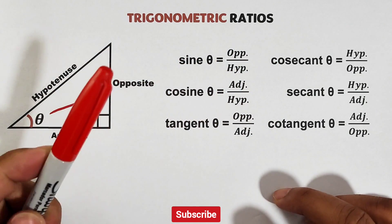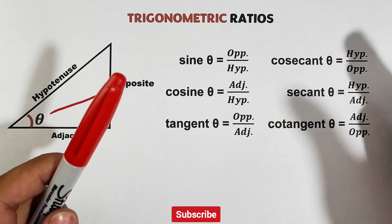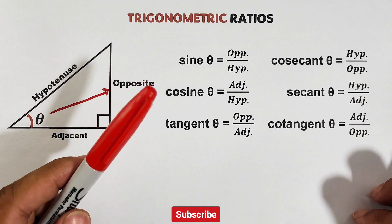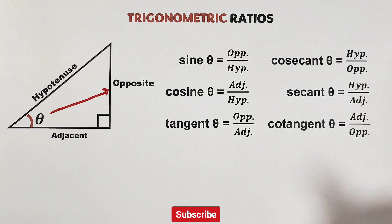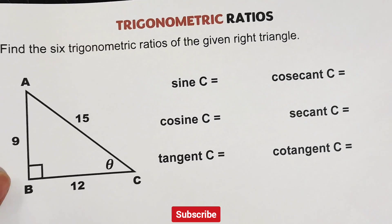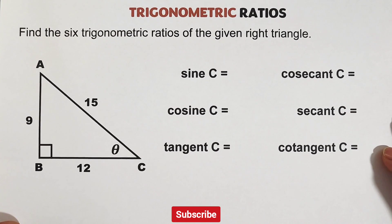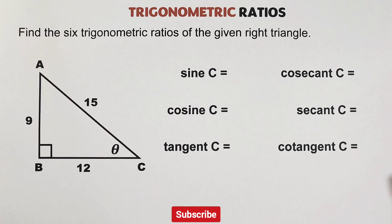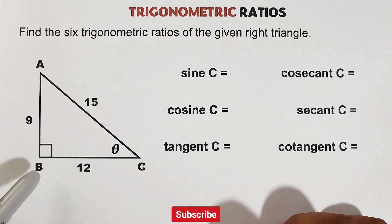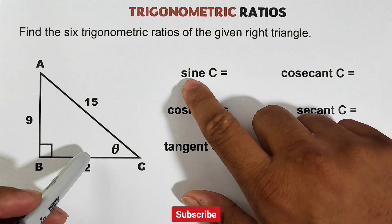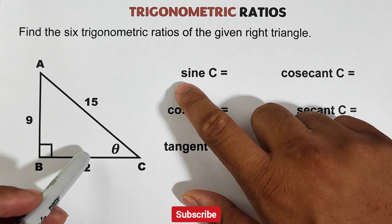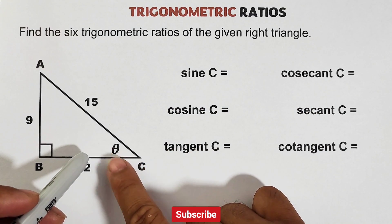My tip here is to memorize these three ratios — sine, cosine, tangent — and then you can easily derive the remaining three reciprocal ratios. Use this to answer certain problems. For example, find the six trigonometric ratios of the given right triangle. We are given right triangle ABC, where B is the right angle, and we are asked to find the six trig ratios with respect to angle C, your angle theta.